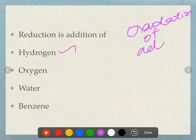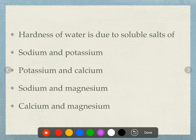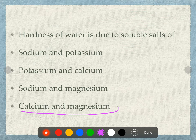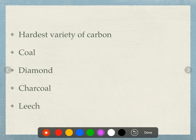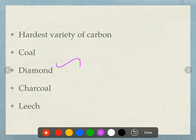Hardness of water is due to soluble salts of: sodium and potassium, potassium and calcium, sodium and magnesium, or calcium and magnesium? The answer is calcium and magnesium. The hardest variety of carbon is diamond.